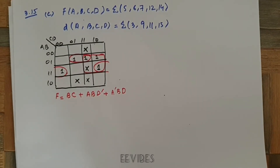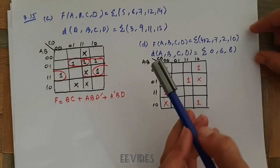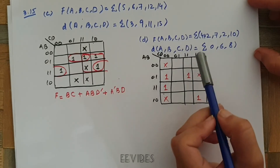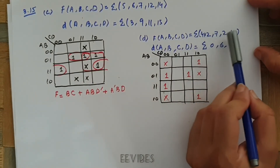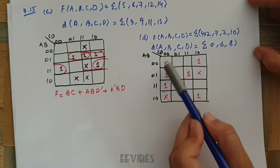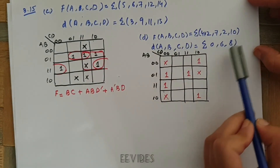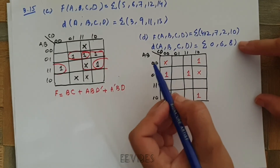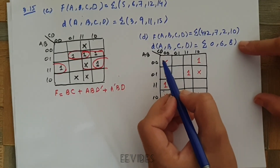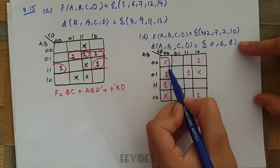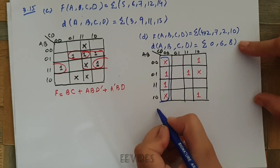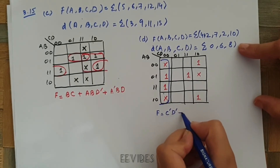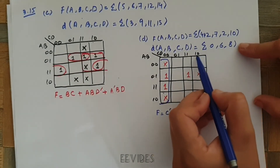Now let's do part D of problem 3.15. The function is given for minterms — not necessarily in order — but you can determine where to place ones in the K-map. The don't care conditions are marked with cross signs. I'll combine four consecutive squares to get the expression C'D'.